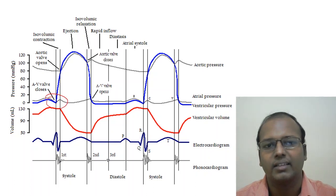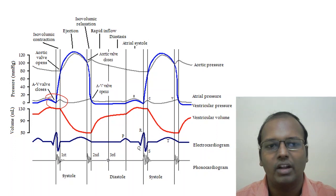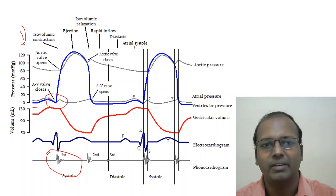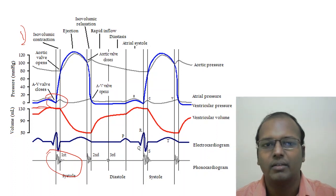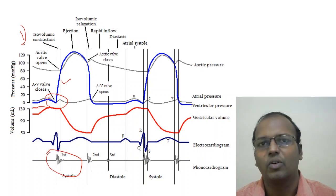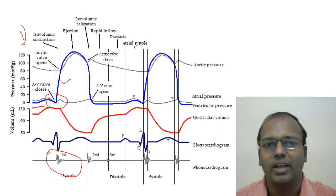Starting from the Guyton diagram: the atrioventricular valve closes when the ventricle is almost full, around 130 ml, producing the first heart sound. Then isovolumetric contraction begins — volume remains at 130 ml but the chamber starts contracting, increasing pressure. Once ventricular pressure exceeds aortic blood pressure, the aortic valve opens, beginning the ejection phase.